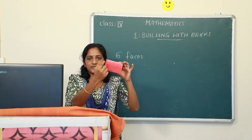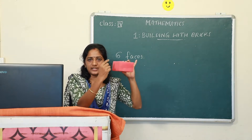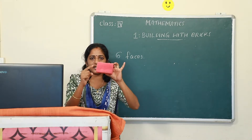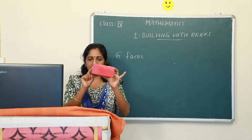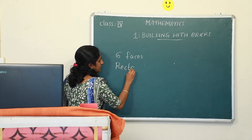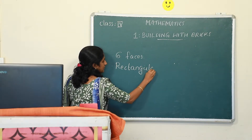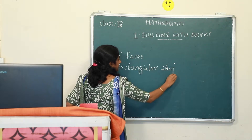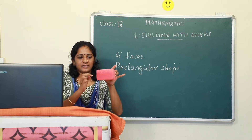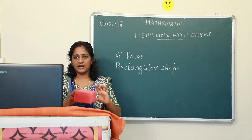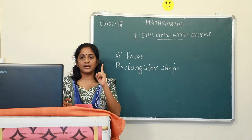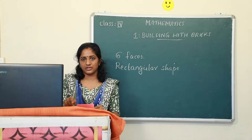Look at the shape of each phase. What is the shape of each phase? Is it square? No. Each phase is rectangular in shape. For a brick, each phase is rectangle in shape. A brick has 6 phases and each phase is rectangle in shape. Now I am going to draw some phases on the board, and you have to identify which phase belongs to a brick.